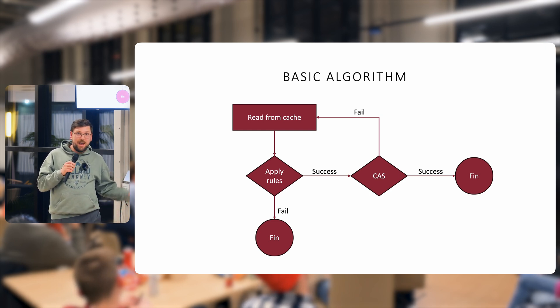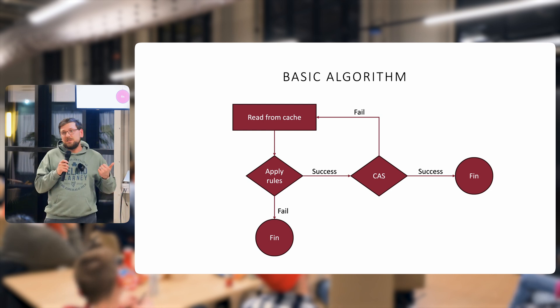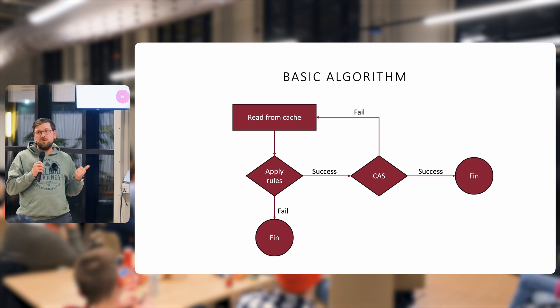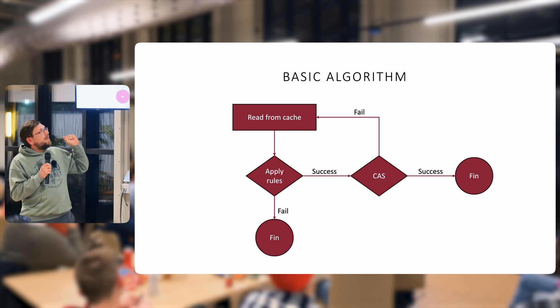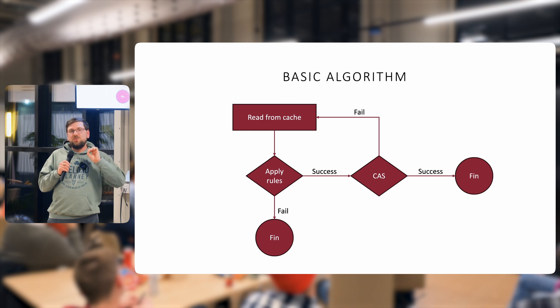And for those that don't know, a compare and swap is basically the only atomic option you really have to update a value in a cache. It basically allows us to say, before you update the value in the cache, is the value in the cache what I expect it to be?